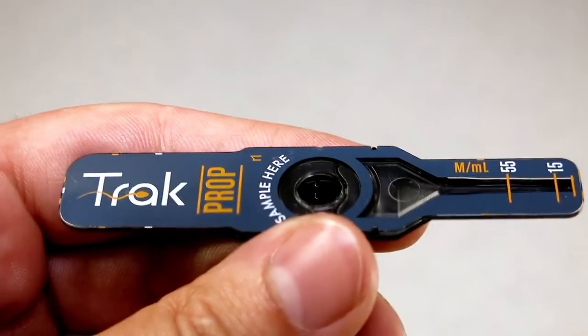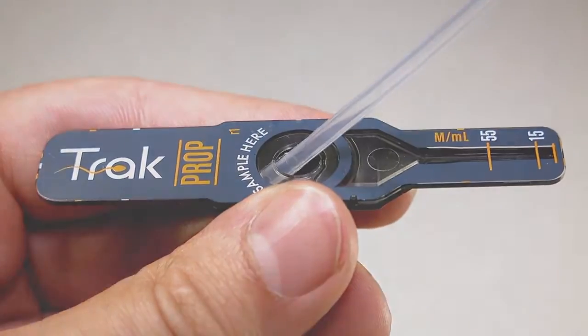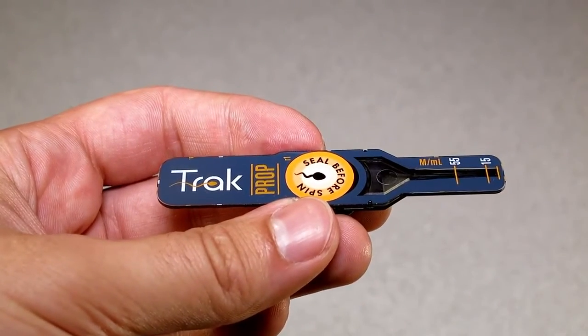Take your TRAC prop and squirt the whole sample into it. Finally, seal the prop with a sticker provided.